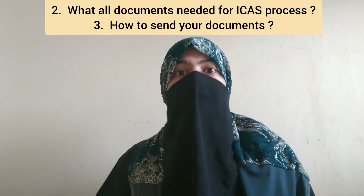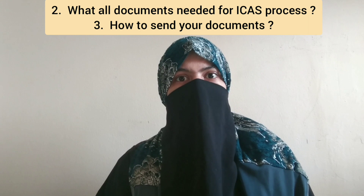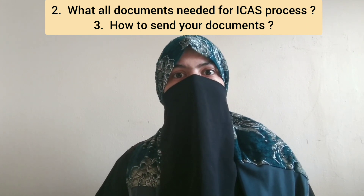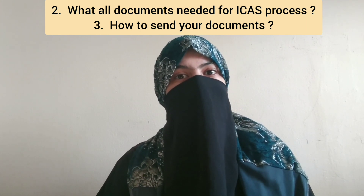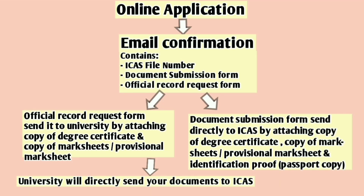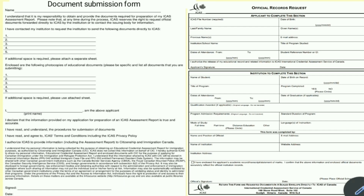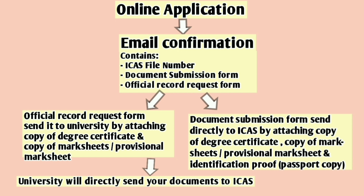The second and third questions I'll be clubbing together: what documents are needed for the ICAS ECA process, and how to send the documents. I'll share one of the slides so you can get a clear view. Once your online application is completed, you will get an email confirmation consisting of three things. Take the printout of the document submission form and the official record request form, fill them up, then send the official record request form to your university with the required documents attached, and the document submission form to ICAS.